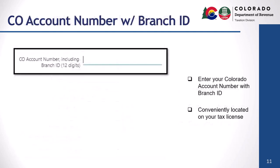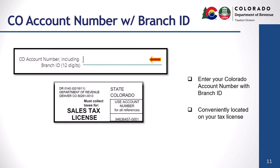You'll now need to enter your Colorado Account Number or CAN with your branch ID. Your Colorado Account Number can be found in the upper left corner of your tax license in the use account number box. The first eight numbers are your account number and the last four numbers after the dash are your branch ID, as shown here.